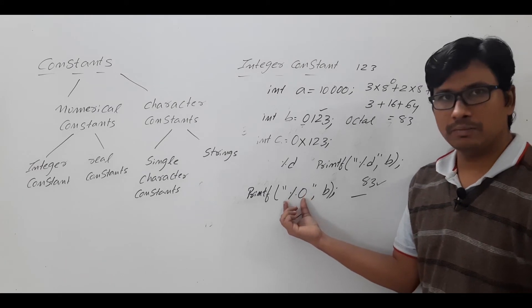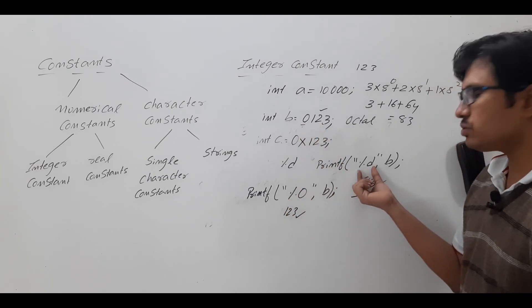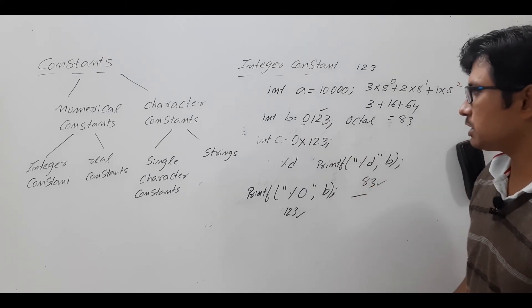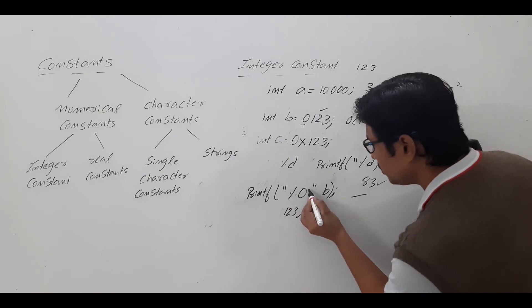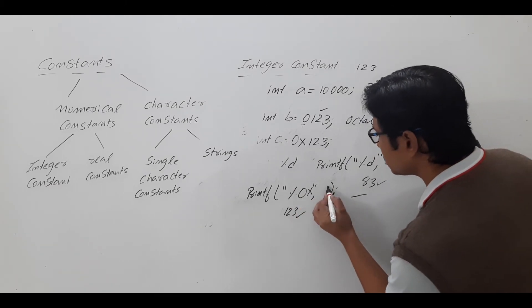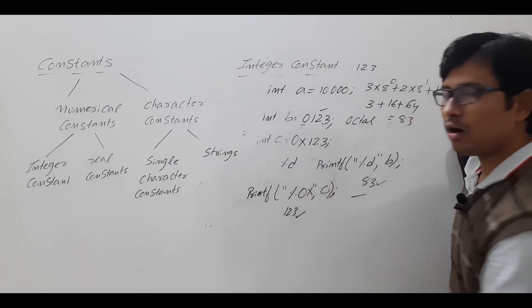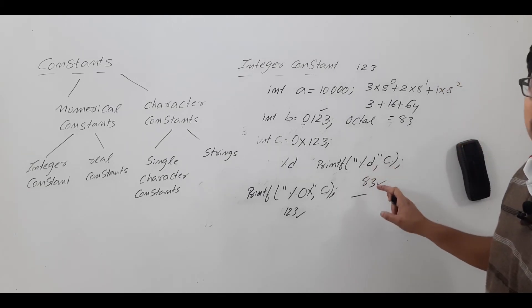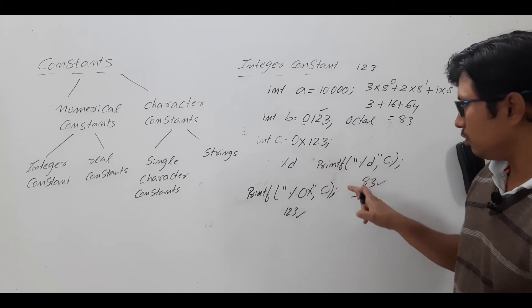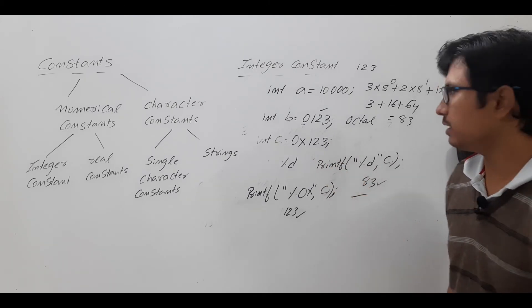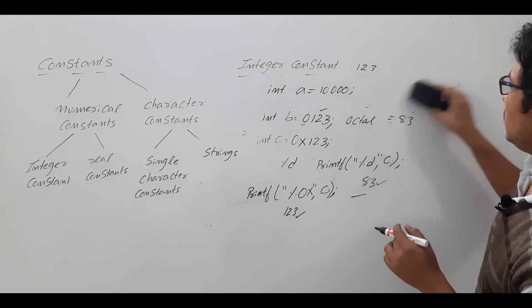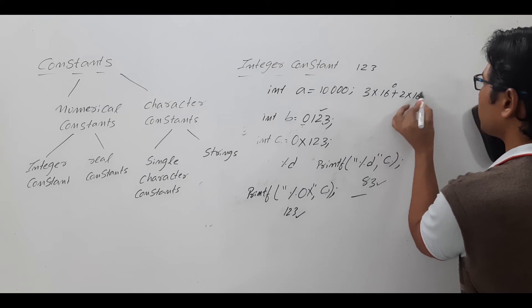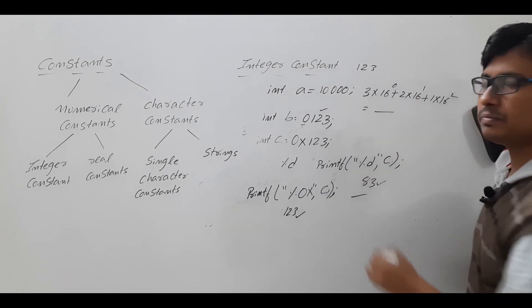If you use format specifier %o, it will display the octal value. If you use %d, the octal number will be converted to decimal and displayed. Similarly for hexadecimal variable c: using %x will display the hexadecimal number, and using %d will convert the hexadecimal to decimal and display it. The hexadecimal 123 converts to decimal as: 3×16⁰ + 2×16¹ + 1×16² and that value will be displayed.